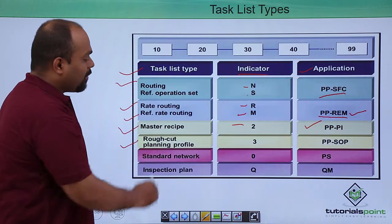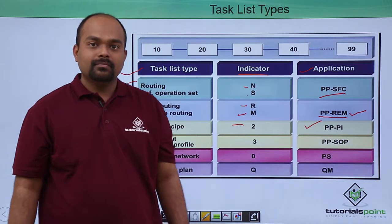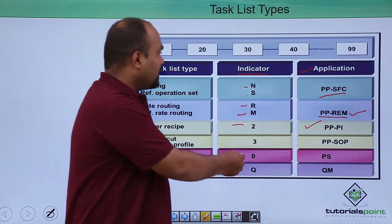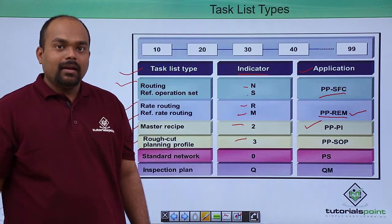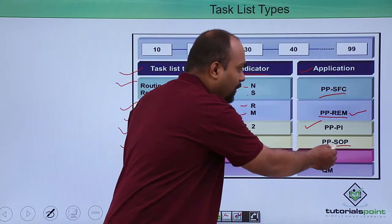The rough cut planning profile indicator is 3 and it is used in SAP SOP.